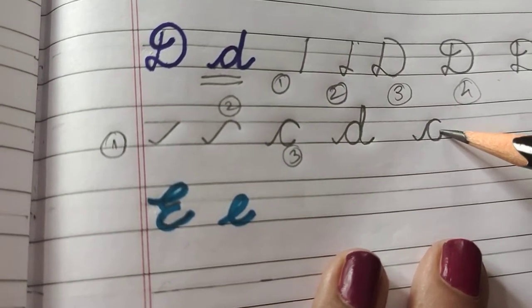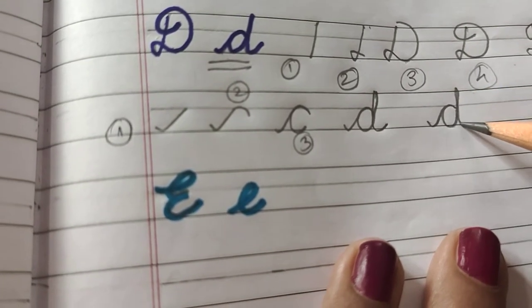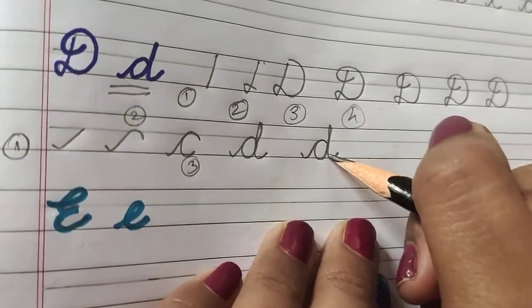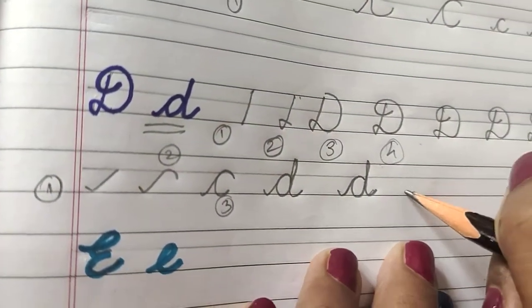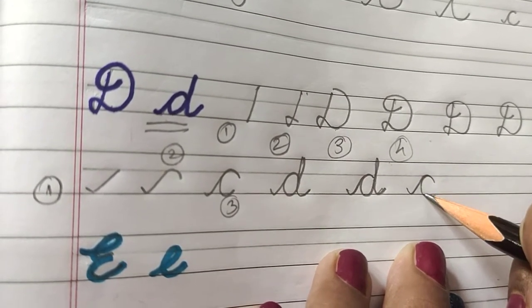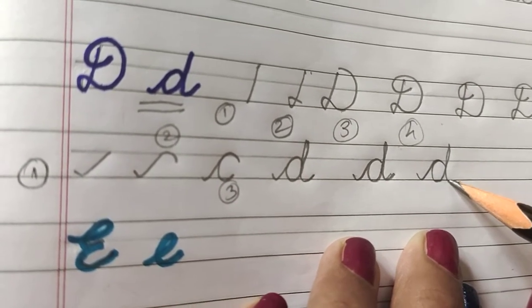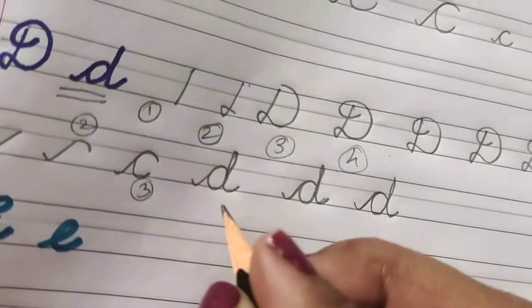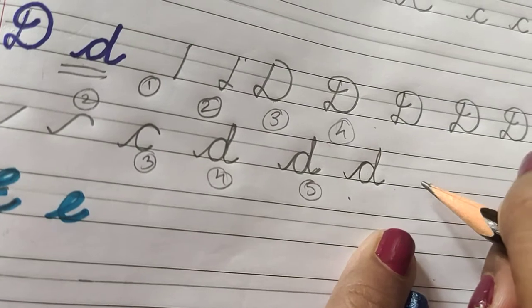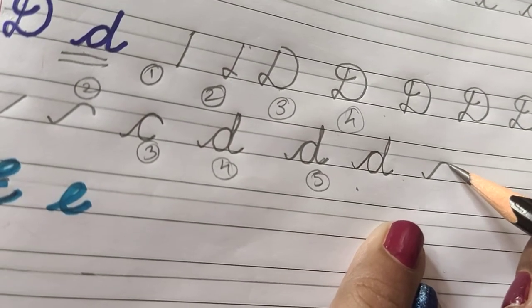See, join this here, extend it upwards, bring it down, and a small curve over here. See, one, two, three, four, and five. In five steps your D will be ready. Again I'll show you: a small tick mark, curve.